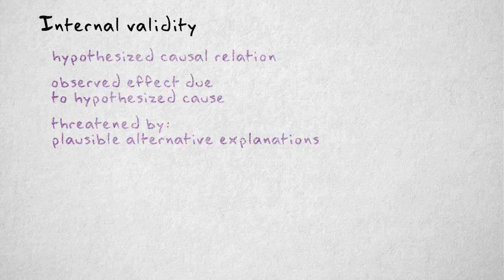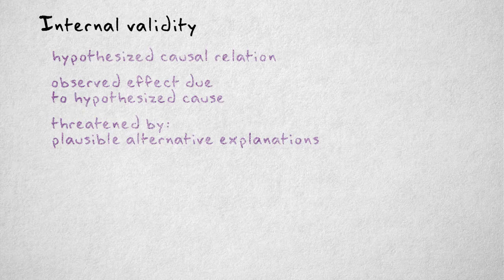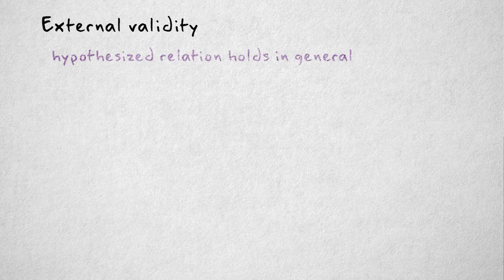There are many different types of threats to internal validity that I will discuss in much more detail in later videos. A study is externally valid if the hypothesized relationship supported by our findings also holds in other settings and other groups.